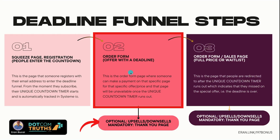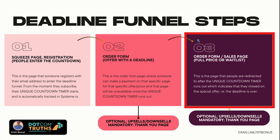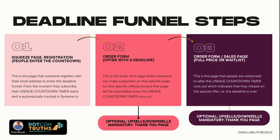It is mandatory to have a thank you page after the order form. The third step is to set up what happens after the deadline expires, which is either a full-price order form or a waitlist if you're closing the door. This is the page where people are redirected to after the unique countdown timer runs out, indicating they missed out on the special offer. So if somebody doesn't take action within five days, they get redirected to the full-price page. It doesn't have to be a pricing reason — it can also be bonuses, or the doors just close. It depends on your strategy.